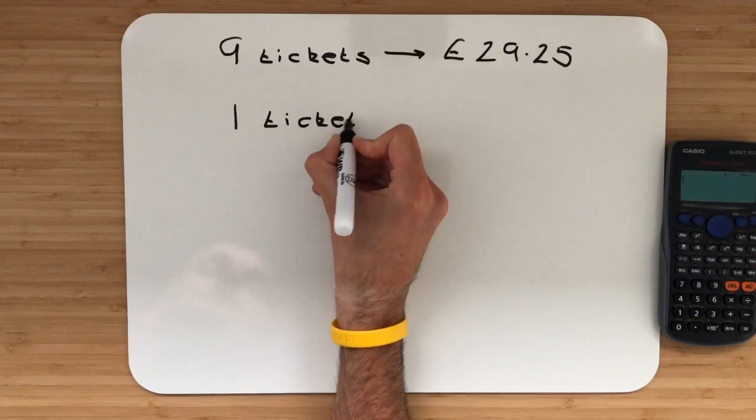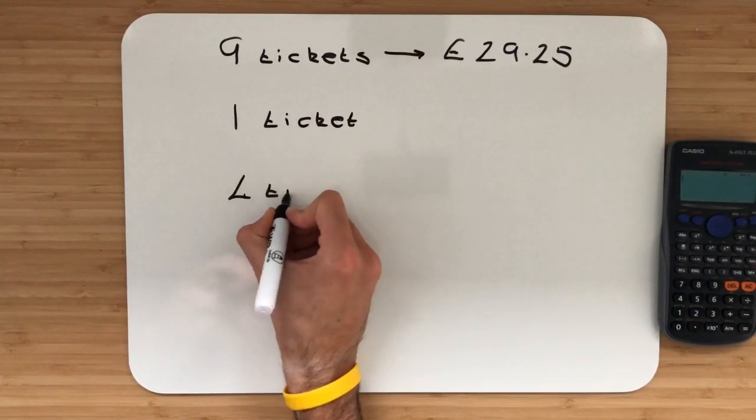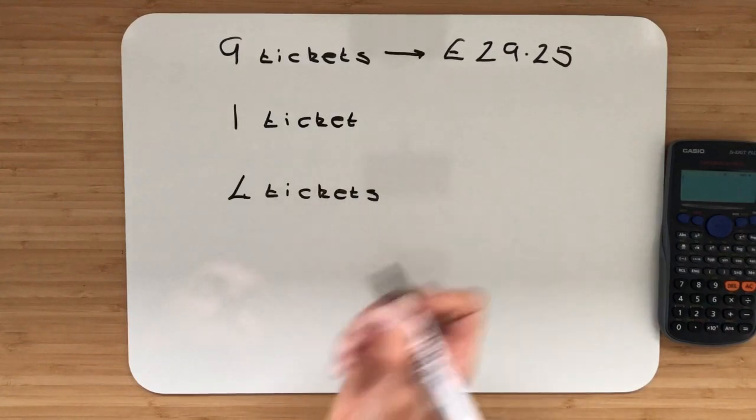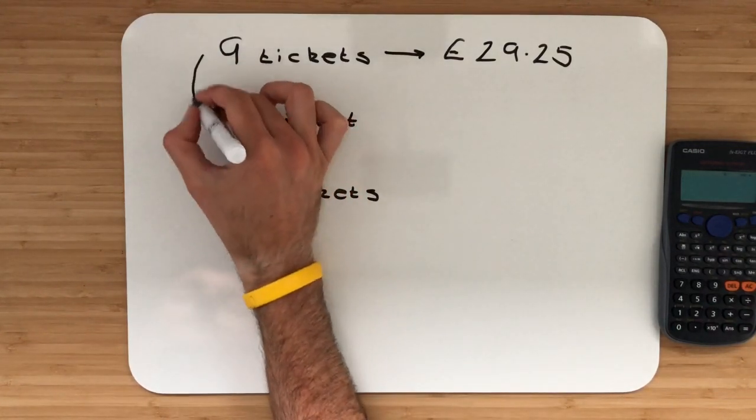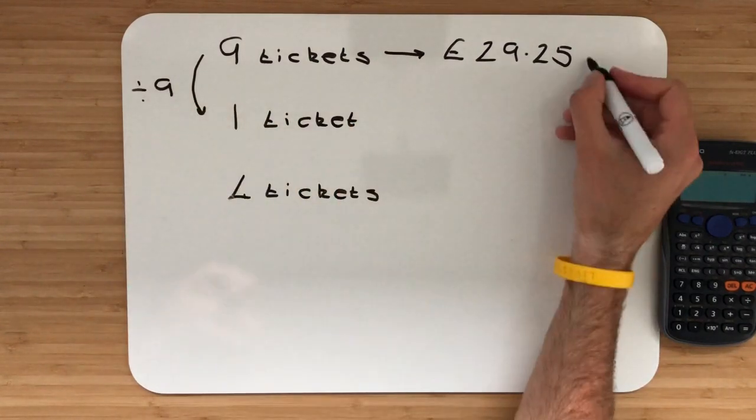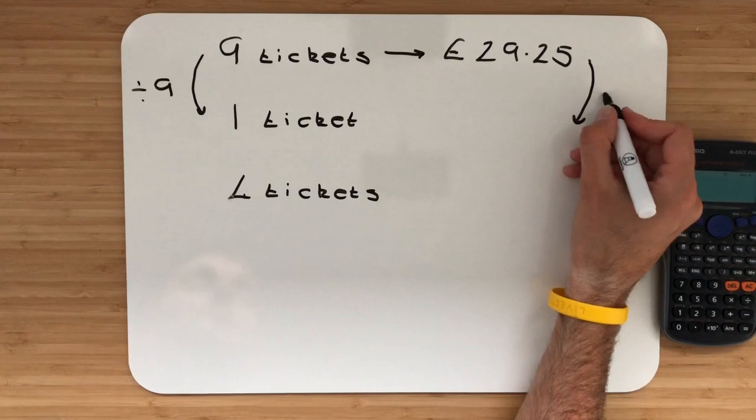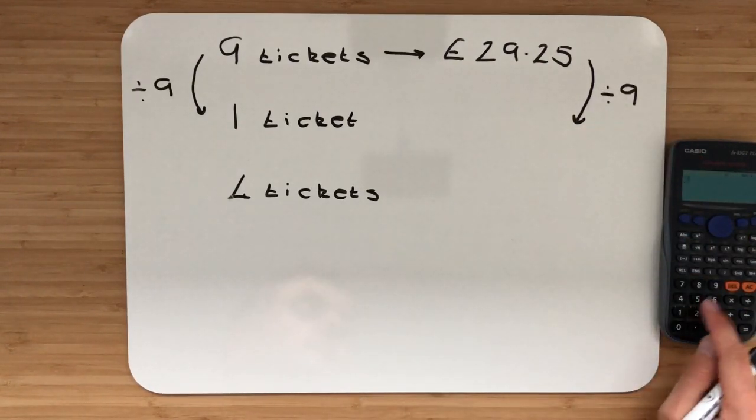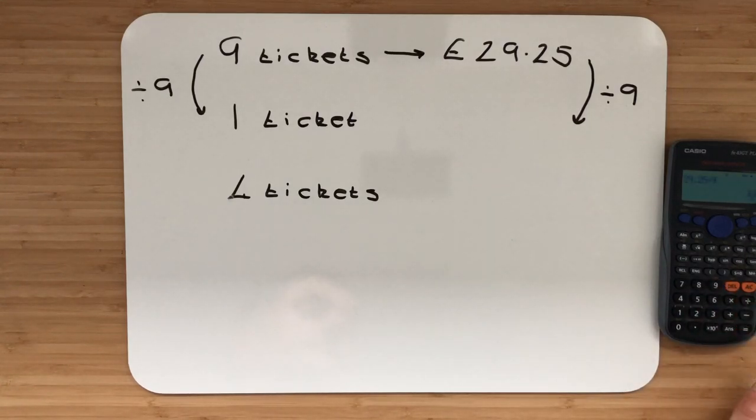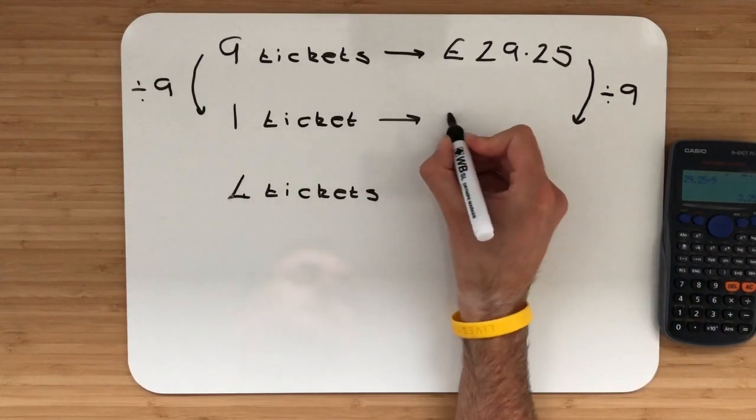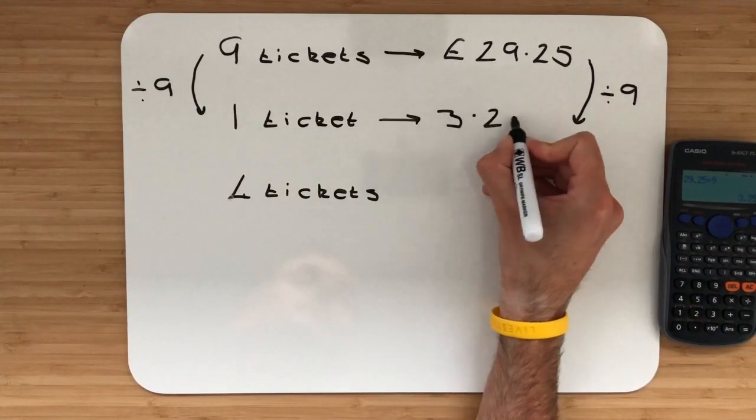After we get one ticket we can then easily find four tickets. So to go from nine to one I'm simply going to divide by nine. Whatever I do to the left I'm going to do the exact same thing to the right. So I'll take my calculator I've got £29.25 which I will divide by nine. Press my STD button and that means that one ticket is costing me £3.25.